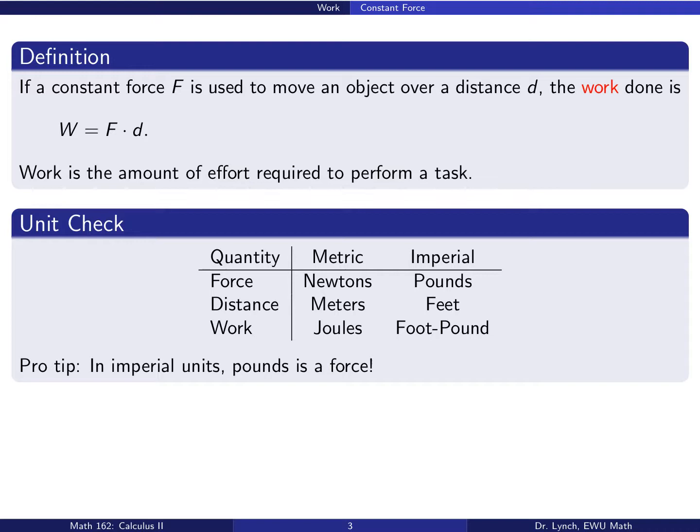A quick units check. We'll use two different unit systems in this section on work. We use metric units in which force is given by newtons, distance is given by meters, and work is in the units of a newton meter or a joule. Similarly, in imperial units, a force is given by pounds, a distance is given by feet, and the work is a foot-pound. Just keep in mind that in imperial units, pounds is a force.